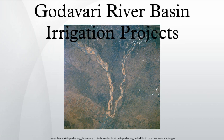Additional projects include: Pranahita Chevella Lift Irrigation Scheme, Pulavaru Project, Ichampalli Project, Kadam, Manjira Reservoir, Lower Dudhana, Purna or Siddheshwar, Upper Penganga, Upper Dudhana Dam, Jayakwadi (Paithan), Pandhari Reservoir, Mula Reservoir, Upper Pravara, Upper Indravati Project, Godavari Canal, and Upper Wainganga. Majalgaon Dam Irrigation Project is located in the Godavari River Basin in the state of Maharashtra.